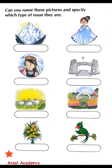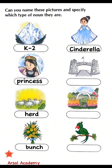Can you name these pictures and specify which type of noun they are? Let's do it together. K2 — it's a proper noun. Princess — it's a common noun. Herd — it's a collective noun. Bunch — it's a collective noun. Cinderella — it's a proper noun. Khyber Pass — it's a proper noun. Park — it's a common noun. Parrot — it's a common noun.